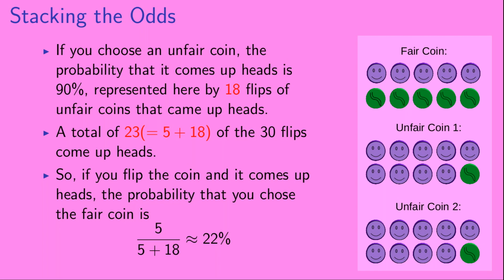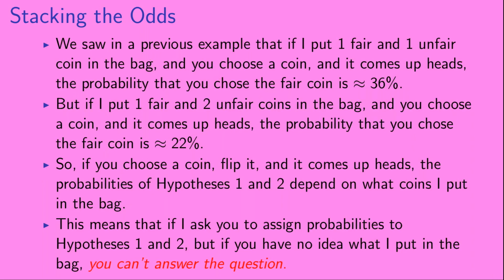So if you flip the coin and it comes up heads, the probability that you chose the fair coin is 5 divided by 23, which is about 22%. We saw in a previous example that if I put one fair and one unfair coin in the bag and you choose a coin and it comes up heads, the probability you chose the fair coin is about 36%. But if I put one fair and two unfair coins in the bag and it comes up heads, the probability is about 22%. So the probabilities of hypotheses one and two depend on what coins I put in the bag.